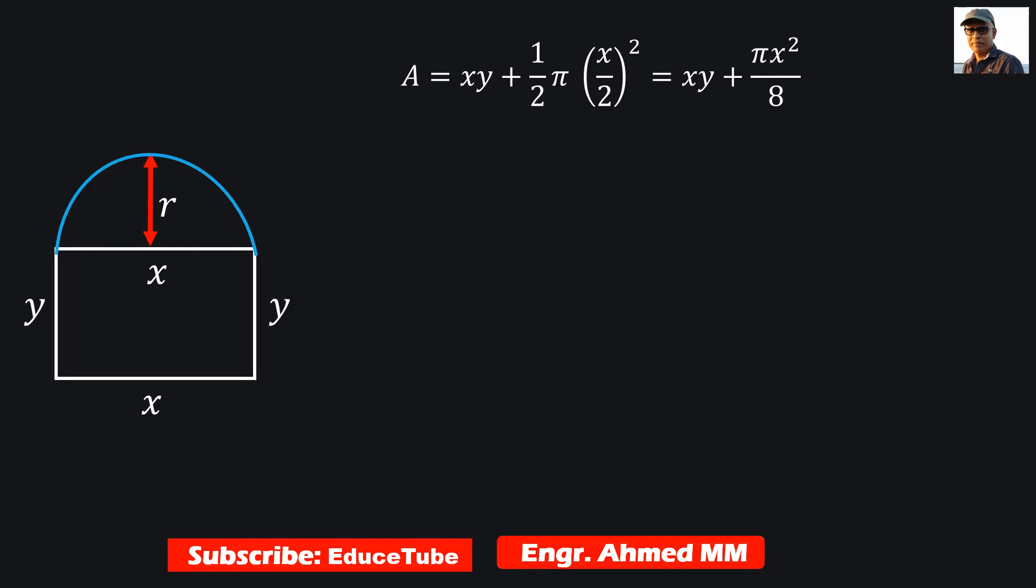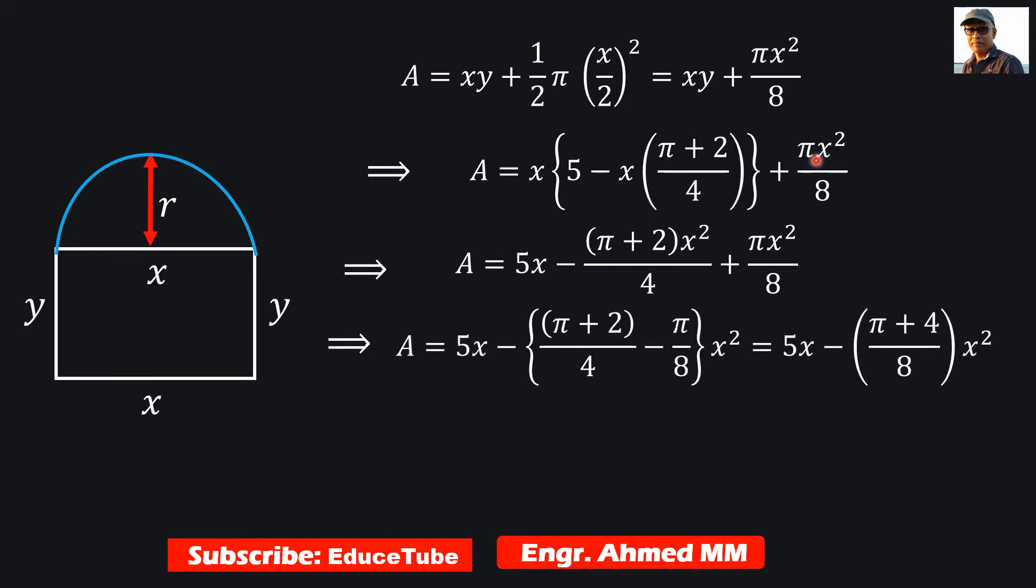Here is the equation for the area. This one, x times y, and this is half pi r squared. Now this y, what you got in the previous slide, the expression for y, we are substituting that here. So we get this area equal to like this. So this is the final form for the expression for the area.